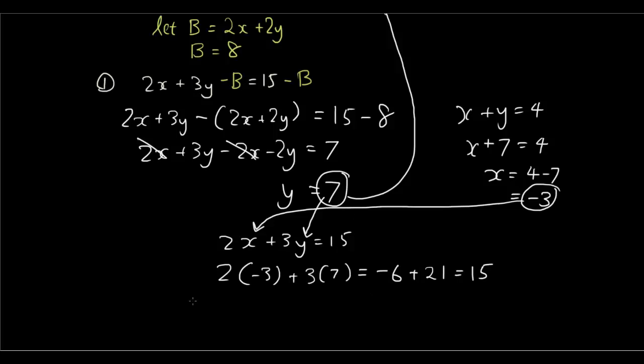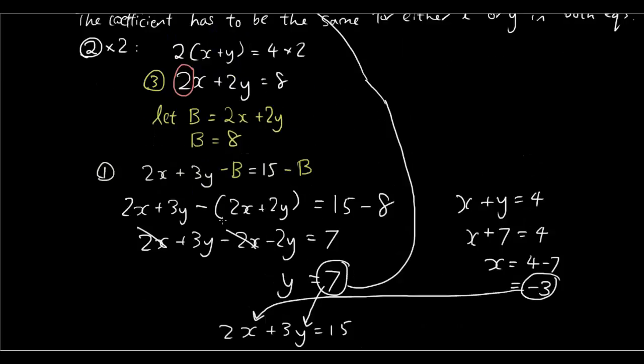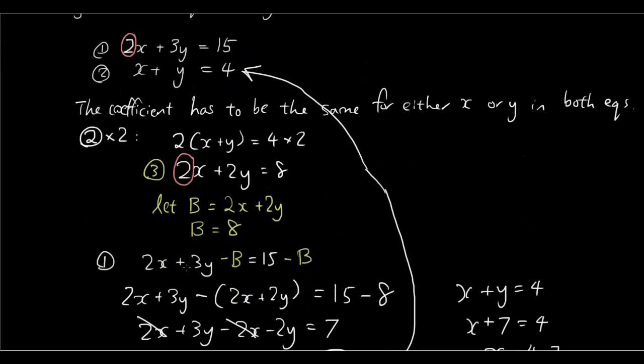So our answers, our solutions are x equals negative 3 and y equals 7 and that is where our two points intersect. Now I'm also going to show you using Graphmatica that that is indeed where the two points intersect.